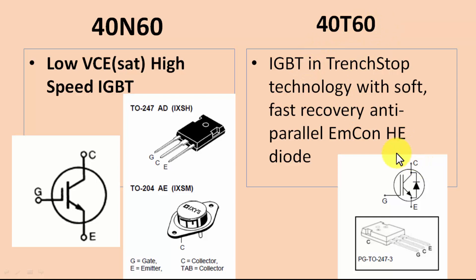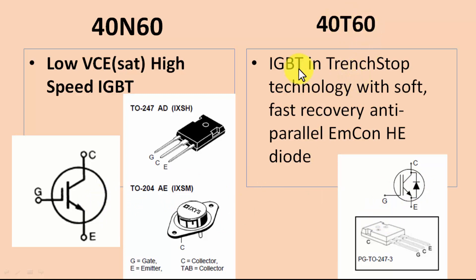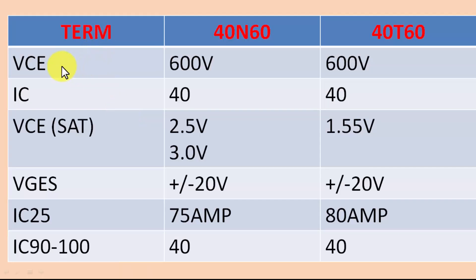The 40T60, however, uses trench stop technology with a built-in fast recovery diode. This is the biggest difference between the two. Because the 40T60 is a next-generation IGBT designed for high-speed switching, it has a built-in recovery diode, whereas the 40N60 does not have any internal diode.